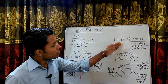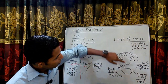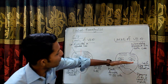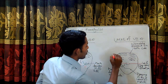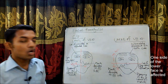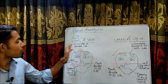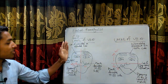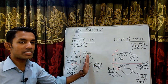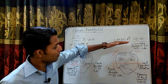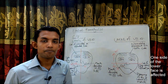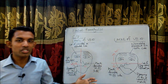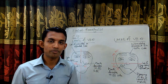In upper motor neuron lesion of facial nerve paralysis, wrinkling is present on both sides, but there is loss of nasolabial fold and drooping of the corner of the mouth on the affected side. This means the upper part of the face is intact and the lower part of the face is affected. This is the key difference: in LMN type, one whole side of the face is affected; in UMN type, the upper part is intact and only the lower part is affected. This will become clearer when I explain the mechanism.